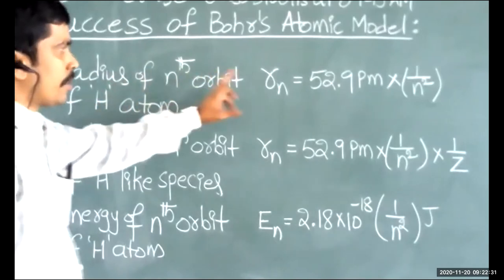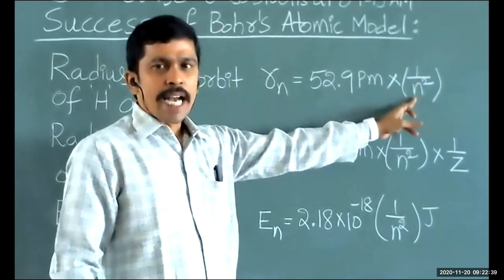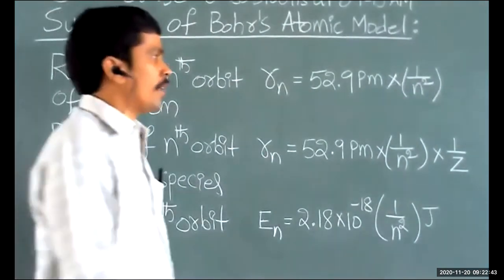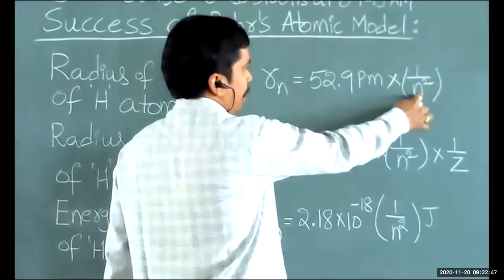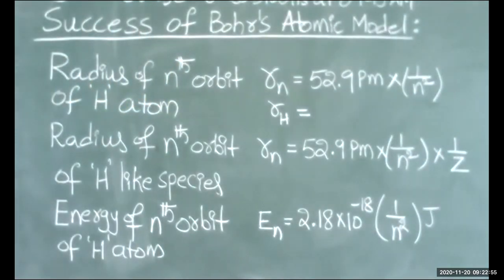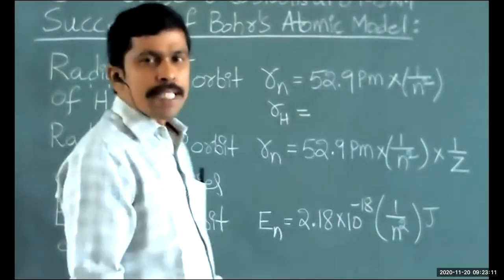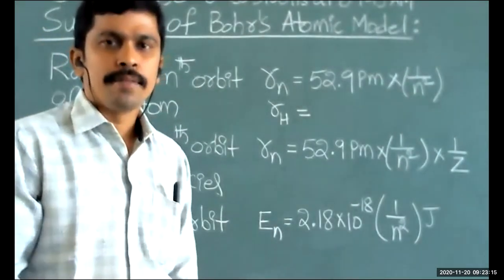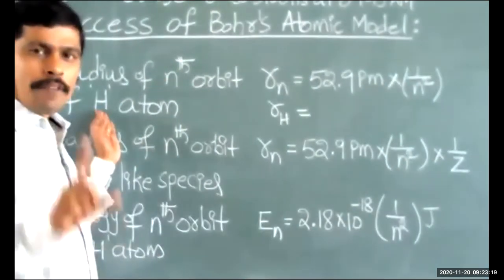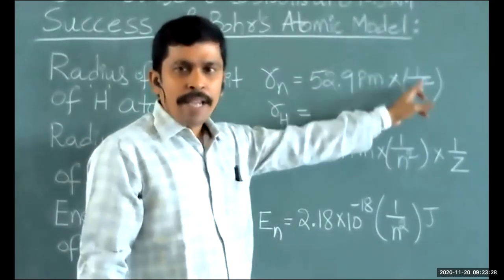The radius of nth orbit of hydrogen atom is given as rn = 52.9 picometers × (1/n²), where n stands for the number of orbit. If the n value is 1, that is the first orbit. So what is the radius of the first orbit of hydrogen atom? Just substitute n = 1 because hydrogen atom has only one electron, present in the first orbit. So 1/1² = 1.